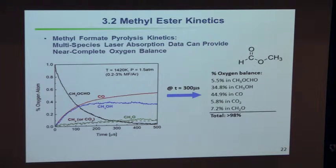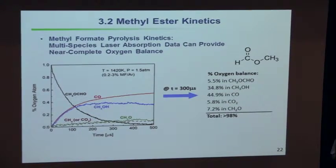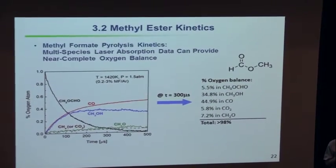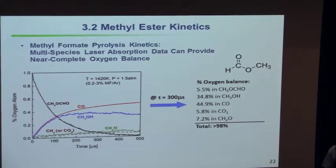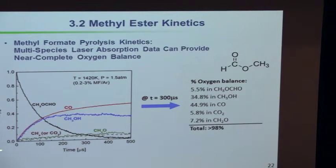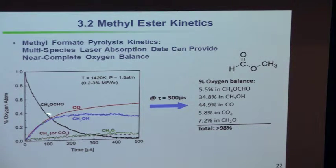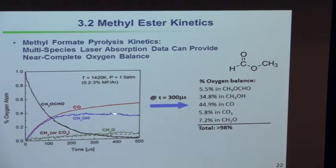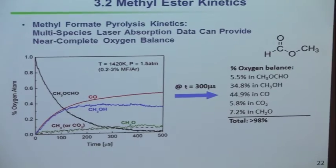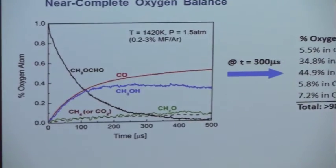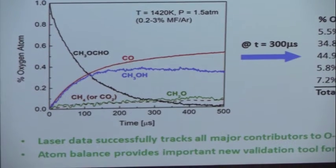The idea is to measure enough things to test the model more rigorously and check whether we're tracking all the species. If we add up measurements at 300 microseconds, we account for over 98% of the oxygen — giving us confidence that we haven't made a big mistake. What we learn is that at short times, the initial reaction is dominated by the immediate formation of methanol and CO. At longer times, the methanol begins to go flat, so it's decomposing to something else. These multi-species time histories are very valuable — the emerging type of data we do.